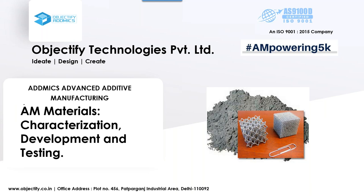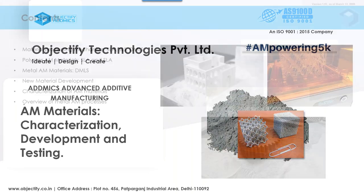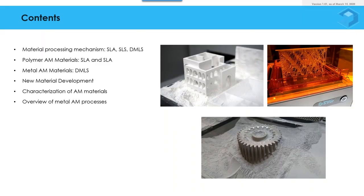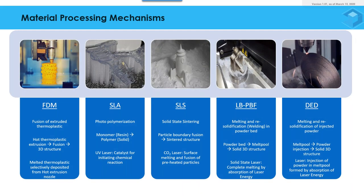Starting the webinar: AM Materials — Characterization, Development and Testing. A brief introduction to the contents: today we'll be discussing material processing mechanisms, especially in relation to stereolithography, selective laser sintering, and direct metal laser sintering — also known as laser-based powder bed fusion. On the polymer side we'll discuss stereolithography and selective laser sintering technologies in detail. On the metal side we'll look at direct metal laser sintering, discuss new material development, and end with characterization of additive manufacturing materials and an overview of metal additive manufacturing processes.